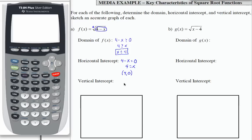To find the vertical intercept, I want to evaluate the function when the input is zero. So f of zero is the square root of four minus zero. That's the square root of four. The square root of four is two. So my vertical intercept is going to have input of zero, output of two.